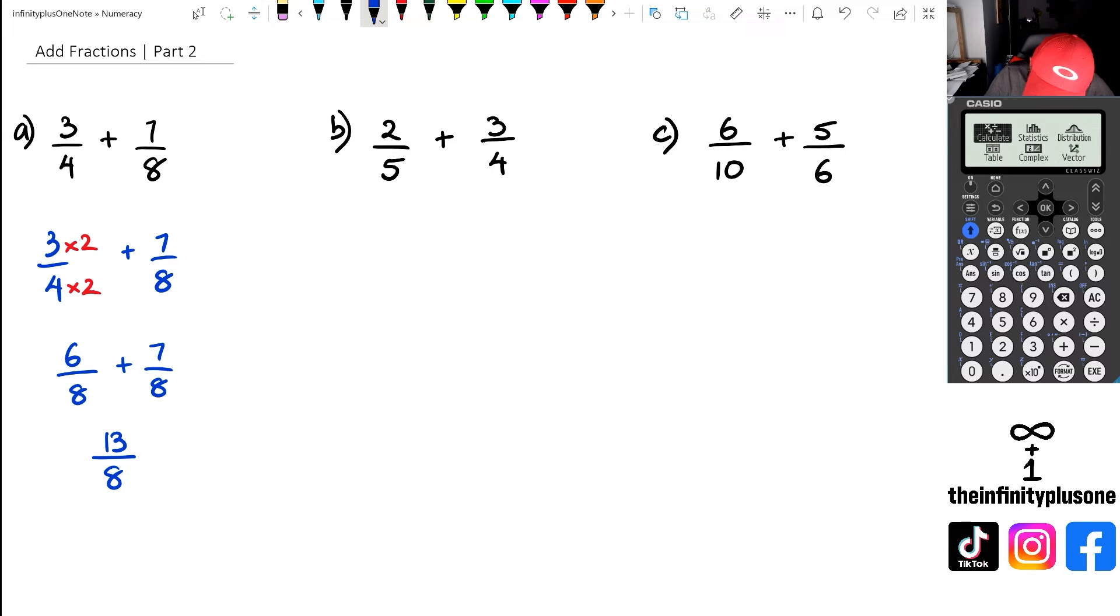So what I'm going to do is I want to write two over five like this, plus three over four. And I know that five times four is 20. So I'm going to multiply the denominator by four, and the numerator by four. And as for the three quarters, I am going to multiply by five for the denominator, and also multiply the numerator by five.